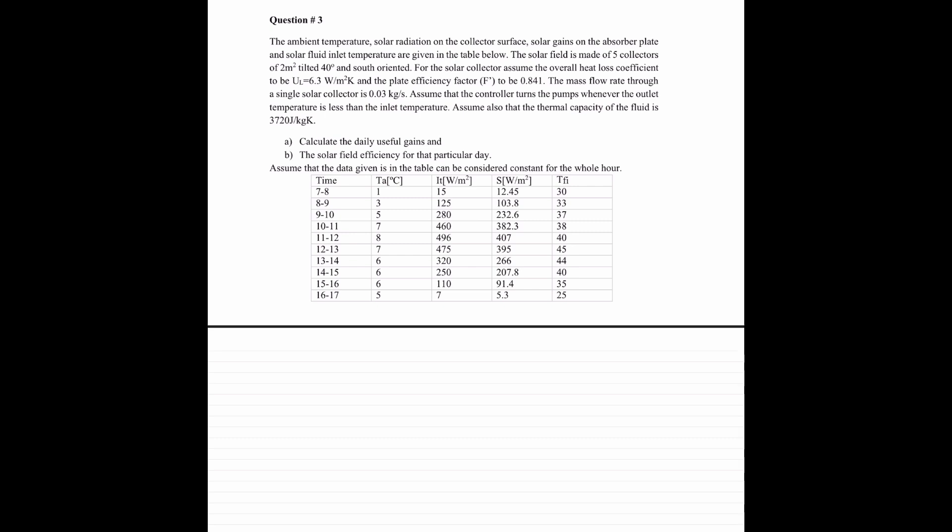The mass flow rate through a single solar collector is 0.03 kg per second. Assume that the controller turns the pumps whenever the outlet temperature is less than the inlet temperature. Assume also that the thermal capacity of the fluid is 3,720.